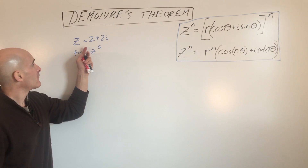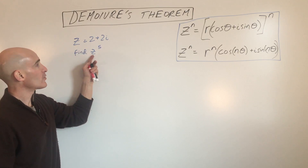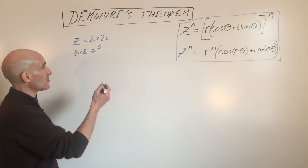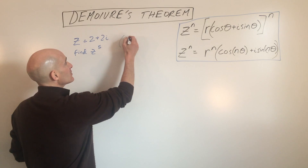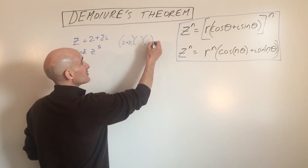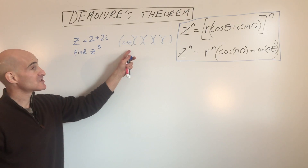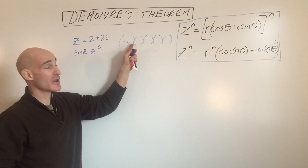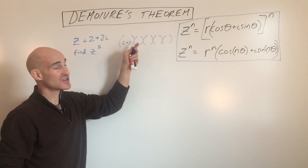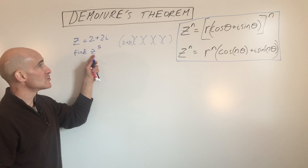Let's look at an example. Say z equals 2 plus 2i and we want to find z to the fifth power. If we wanted to do this the long way, we could multiply 2 plus 2i by itself five times, but this would take a long time because you'd have to FOIL out binomials repeatedly. So instead we're going to use De Moivre's Theorem.